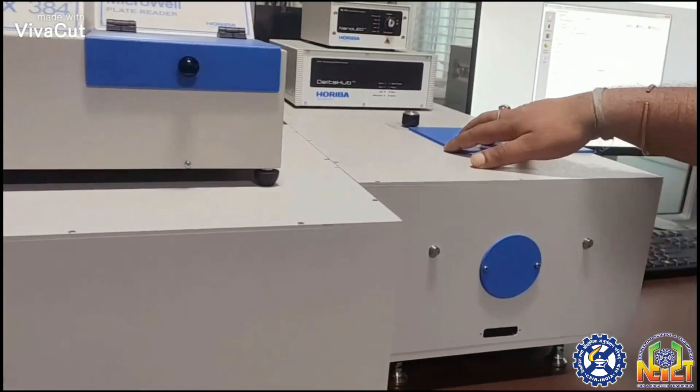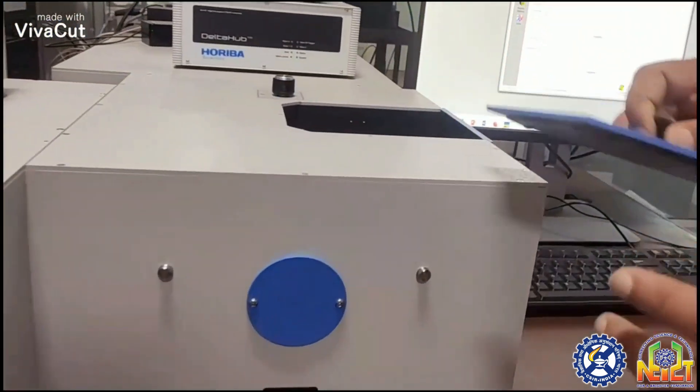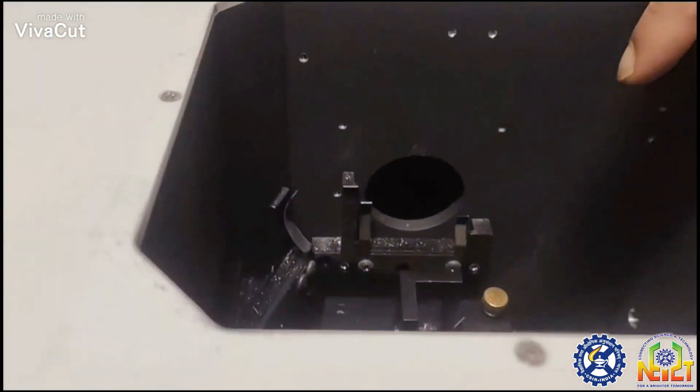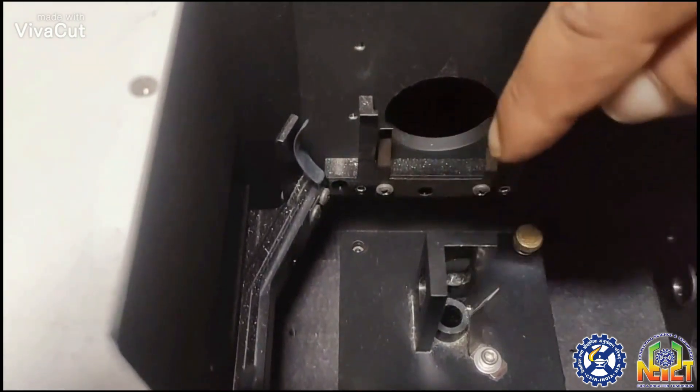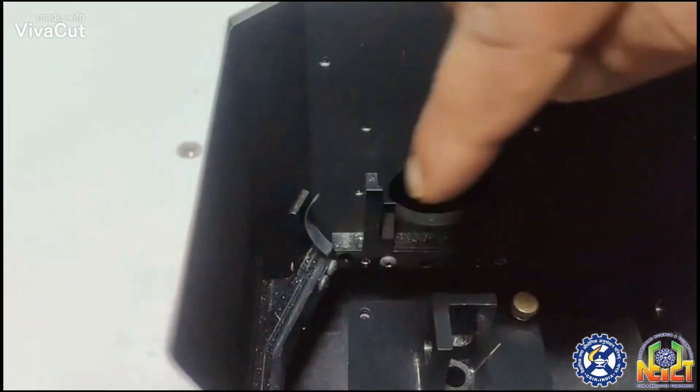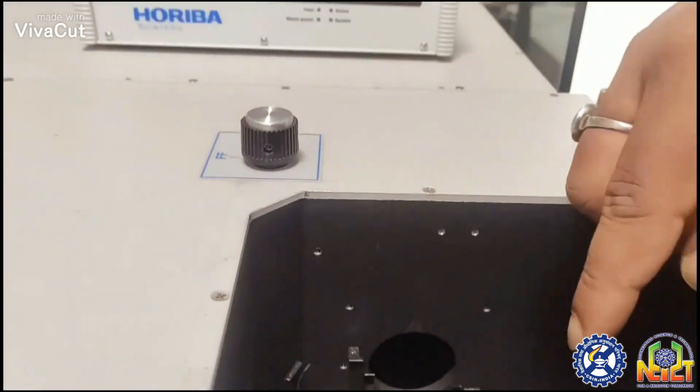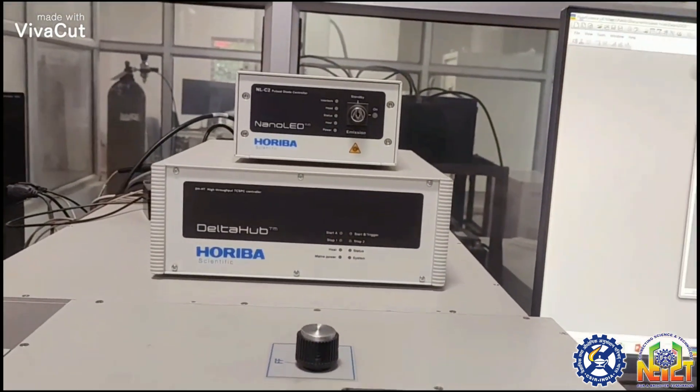This is the sample compartment where you place the cuvette with your compound. This is the input side and this is the output side. Light enters from the input, passes through the sample, and exits to be analyzed at the detector.